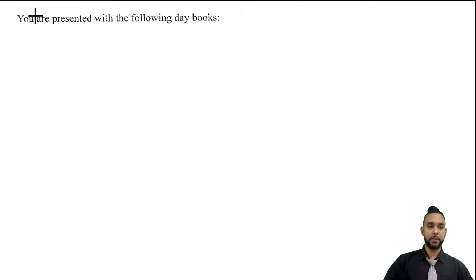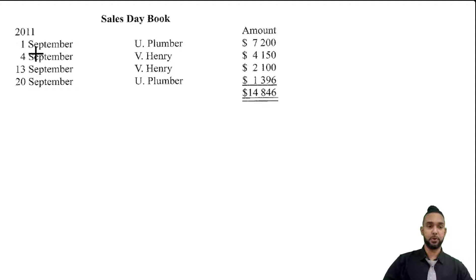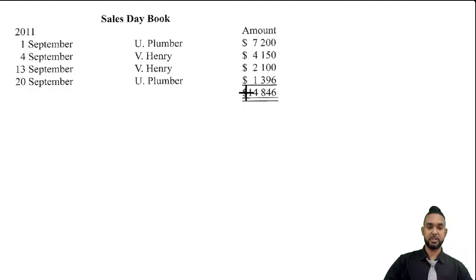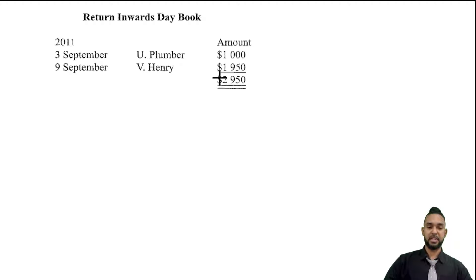That's the end of part A. Let's take a look at part B. We're presented with day books, also known as journals. The sales book is the sales journal, which records only credit sales of inventory. On 1st September there's a credit sale to U Plumber of $7,200; on the 4th to V Henry of $41.50; on the 13th to V Henry again for $2,100; and on the 20th to U Plumber for $13.96 — a total of $14,846. The returns inwards day book shows a return from U Plumber on the 3rd for $1,000 and from V Henry on the 9th for $1,950, totaling $2,950.